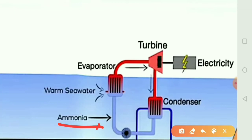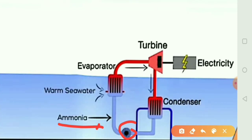The vapor passes through the turbine and rotates it, generating electricity. Water from the deeper level is then pumped up, and the vapor is converted back into liquid, completing the cycle. By this cycle we can generate electricity, which can be used to run our appliances.